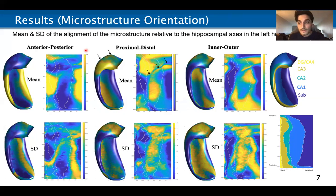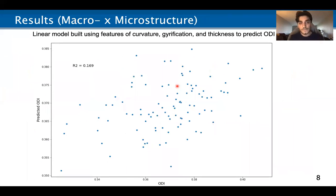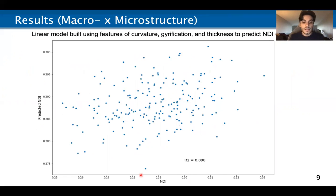I don't have a ton of time to elucidate all the properties driving these values, but for example, we know a priori microstructural properties in CA-1 that are oriented proximal-distally, and perhaps these values in that region are capturing that known property. Future studies are needed to confirm this. Here I'm showing a linear model built using features of curvature, gyrification, and thickness to predict ODI. Macrostructure can explain about 17% of the variance in ODI, and doing the same for NDI, macrostructure explains about 10% of the variance in NDI.